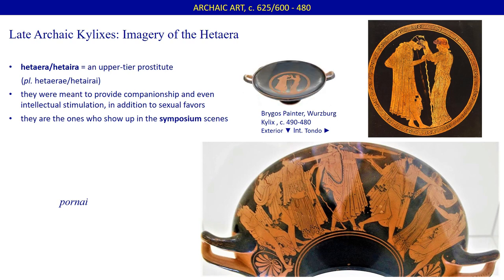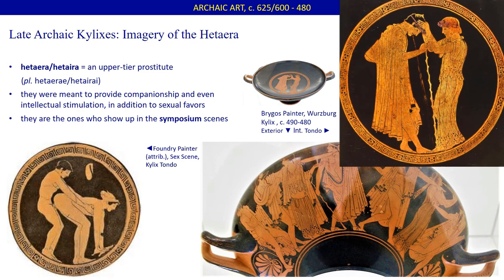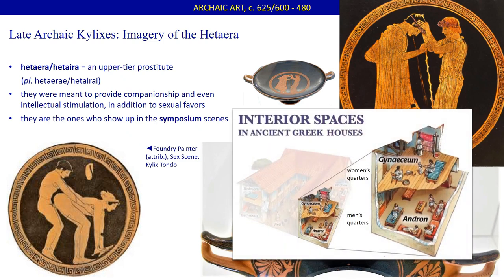Kylixes, which are the drinking cups used at symposia, often have a surprise image for the drinker once he has finished his cup. These images can be humorous or bawdy, with sex scenes appearing more frequently in the late archaic period. Images of a drunk man standing by his companion who offers comfort as he vomits are particularly sardonic, considering the viewer has just finished a large cup of wine. But the reason hetairas are there is because men wanted female company. Wives did not attend the symposia. These drinking parties took place in the men's quarters, and even the wife of the host remained sequestered in the female quarters of the home, unseen.